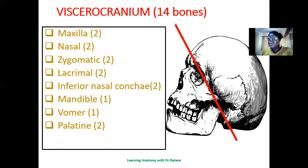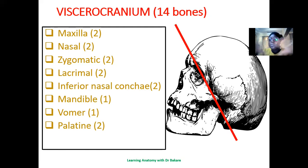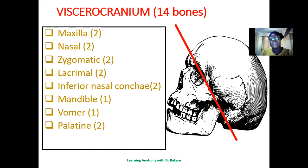The viscerocranium is made up of 14 bones in totality — six paired bones and two unpaired bones. If you sum this with the eight bones of the neurocranium, you have a total of 22 bones making up the entire cranium. We would be discussing the viscerocranium bones one after the other to see their morphology and also where they are positioned.